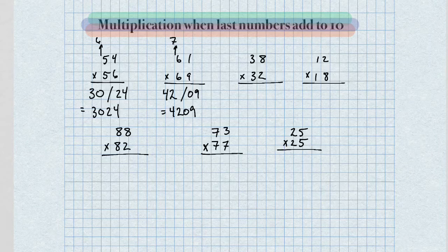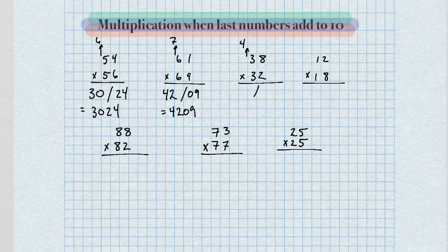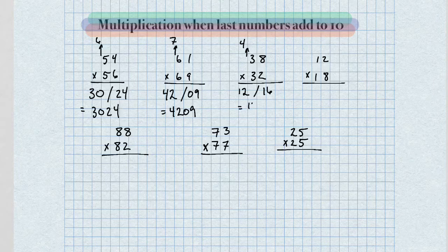Next problem — the next number up from 3 is 4. So for the left-hand side, we get 3 times 4, which is 12. Right-hand side, 2 times 8 is 16. Our answer is 1,216.